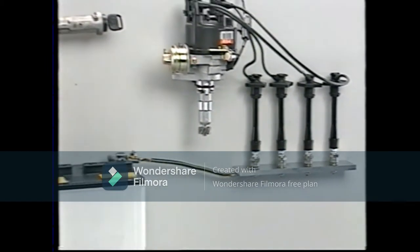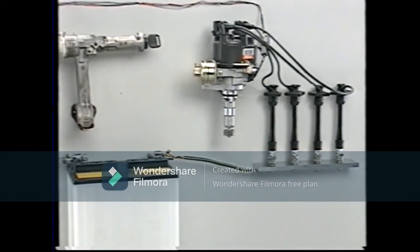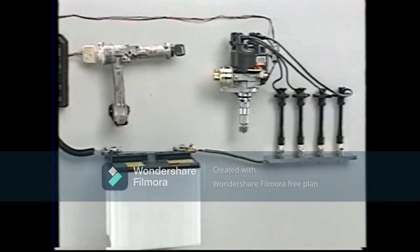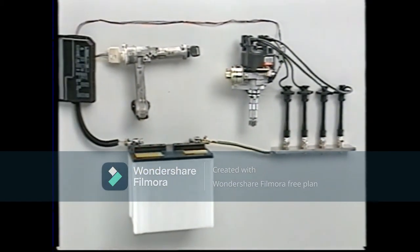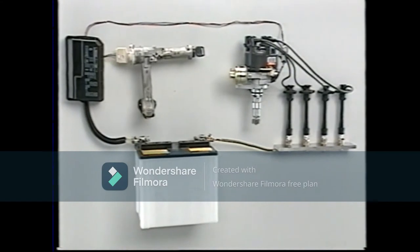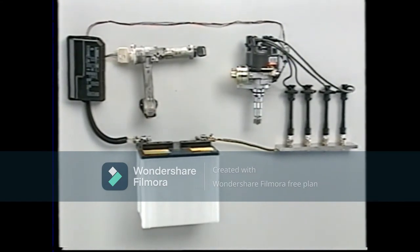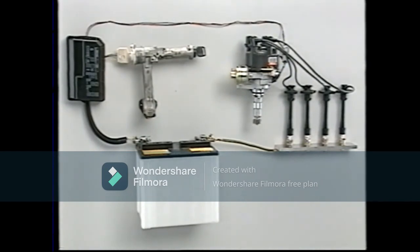Spark plugs require a high voltage of more than 10,000 volts to generate sparks, but the vehicle's only source of electrical power is a 12-volt battery. So how do we generate a high voltage from a 12-volt power source? Let's explain.